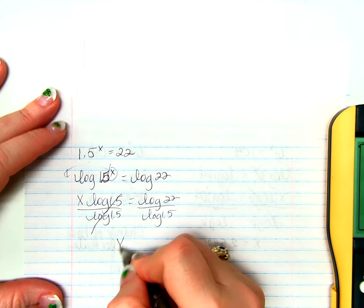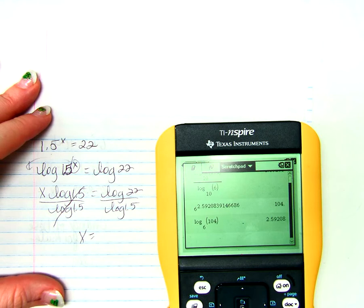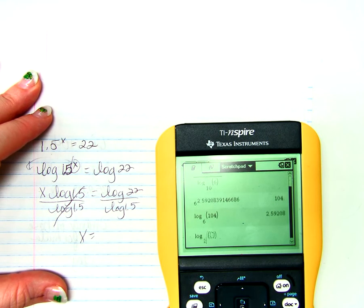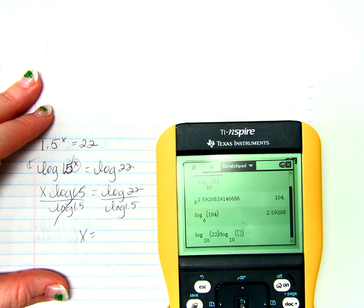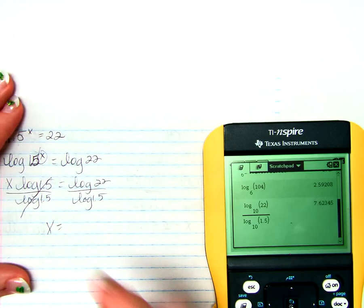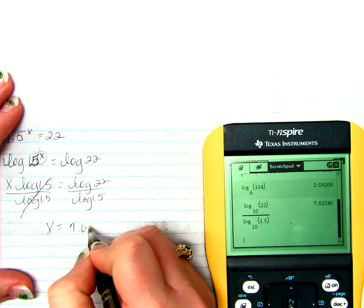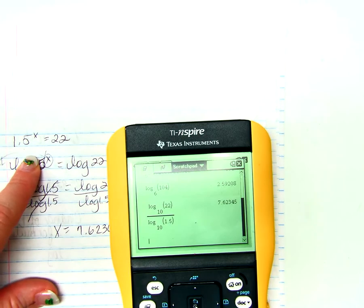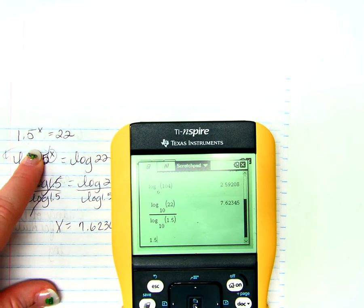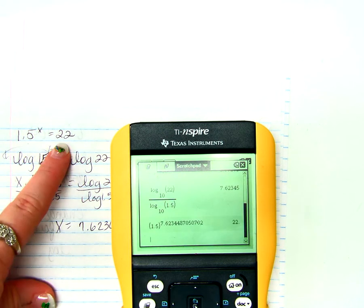That's a 1, x then is going to equal the log base 10 of 22, divided by the log base 10 of 1.5. x equals 7.62345. Again, we're going to check our work, and we're going to say 1.5 raised to that answer, the previous answer, and sure enough we get 22.